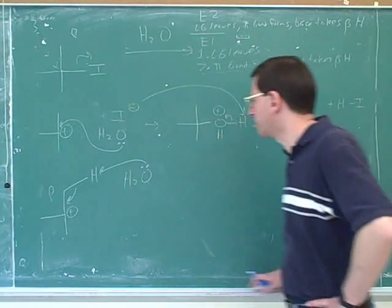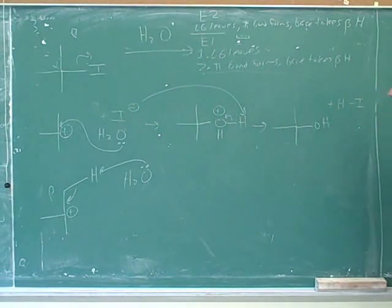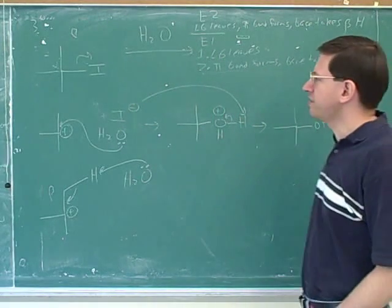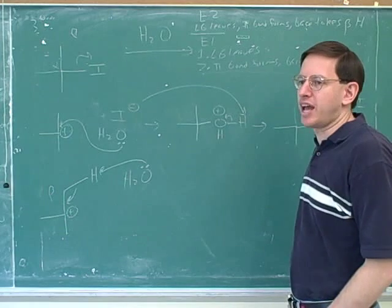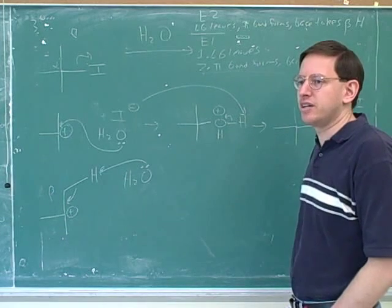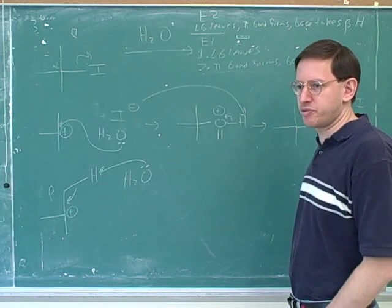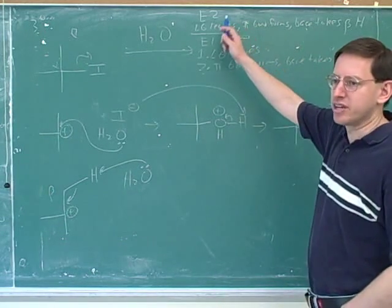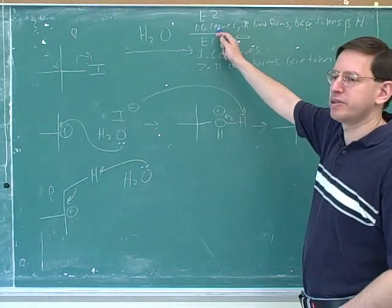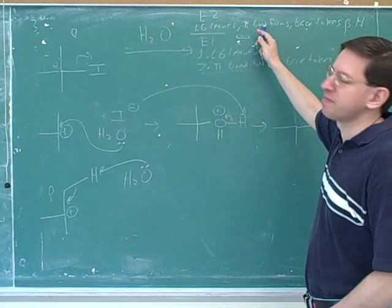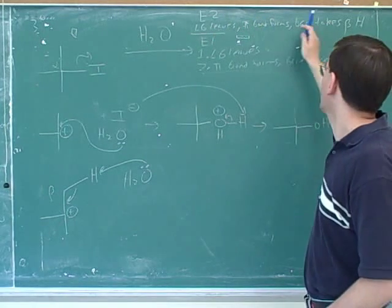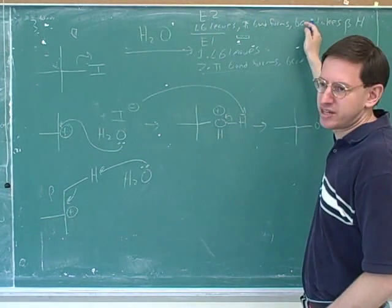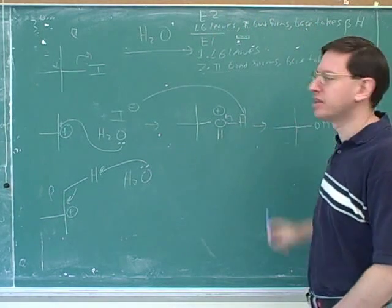Let's summarize what we went through. How many arrows are there in an E2 reaction? In an E2 reaction there are three arrows: an arrow for the leaving group leaving, an arrow for the pi bond forming, and an arrow for the base taking the beta hydrogen.